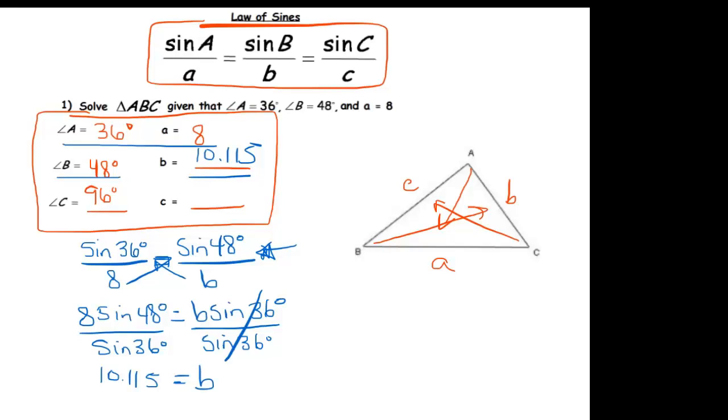And now I'm going to go ahead and find angle C. So angle C, I have two options now. I have all the information for letter A and all the information for B. So I can use either one of those as my sort of full ratio. But I always start with the one that was given to me in the problem. So I'm going to do sine of 36 over 8 again. And I'm going to set that equal to the sine of 96 degrees over C. I'm going to cross multiply again to get that C times sine of 36 degrees is equal to 8 times sine of 96 degrees. And then I'm going to divide by sine of 36 degrees.